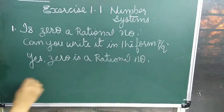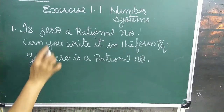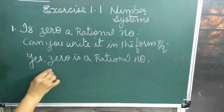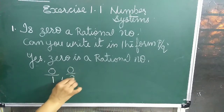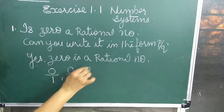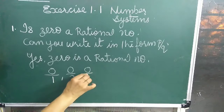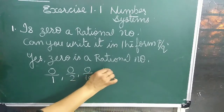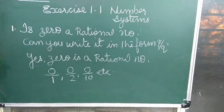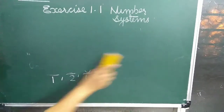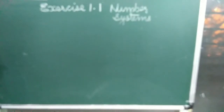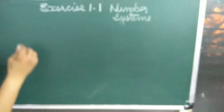Zero can be written as 0 upon 1, or 0 upon 2, or 0 upon 10, and so on. Now question number two: find six rational numbers between 3 and 4.